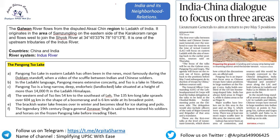First important news related to GS Paper 2 — India and its neighborhood relations. India-China dialogue will focus on three areas. The first-ever talks between Indian and Chinese Lieutenant Generals over the weekend to ease tension on the Line of Actual Control will focus on Eastern Ladakh. The focus of these talks — important for Prelims — will be on the Galwan area, Pangong So, and Gogra.